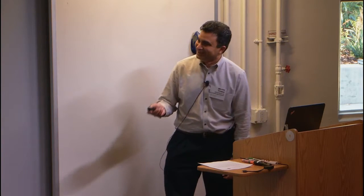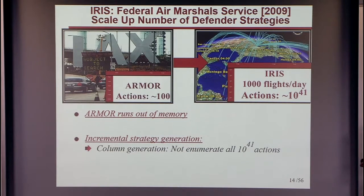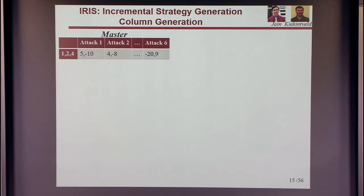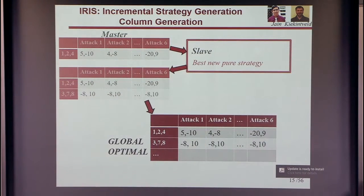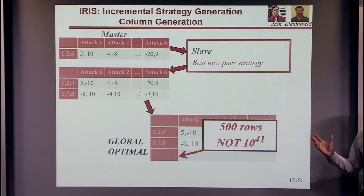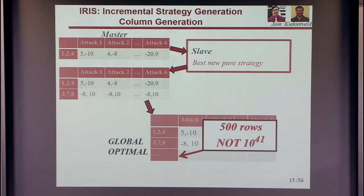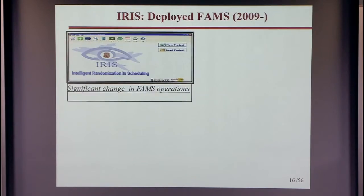With the basic ARMOR approach, feeding the full game matrix caused it to run out of memory. We needed incremental strategy generation — column generation. Instead of enumerating all 10^41 defender strategies, we use a master-slave decomposition: start with a few strategies in a master program, iterate, and find the global optimum with perhaps only 500 rows in the game matrix rather than 10^41. This is how these games get solved, and how the IRIS program was built. IRIS was delivered to the air marshals, deployed in 2009, and significantly changed the FAMS operation. In 2012, a congressional subcommittee hearing again mentioned the USC-FAMS project on randomizing flights.